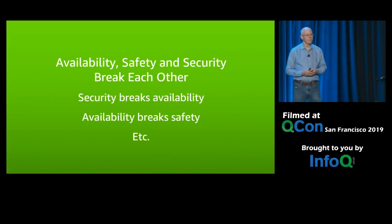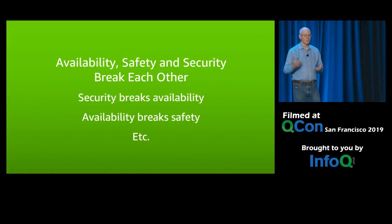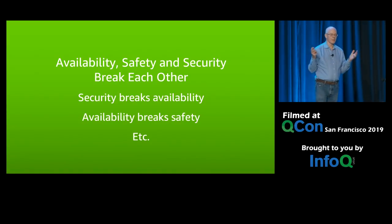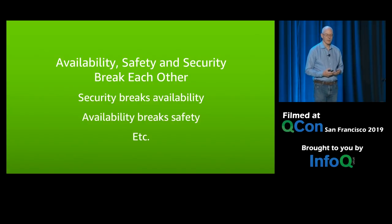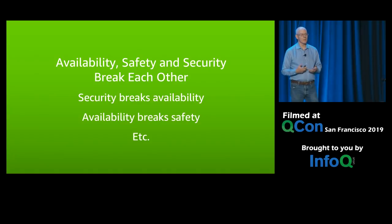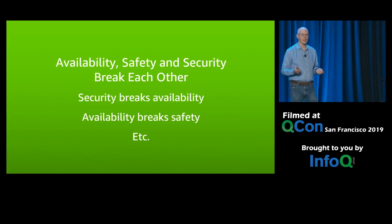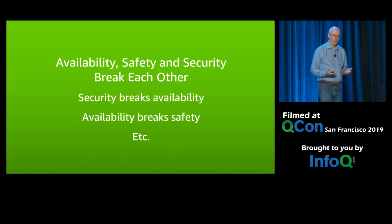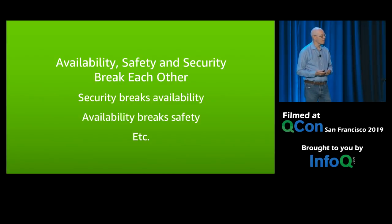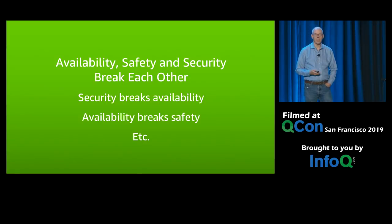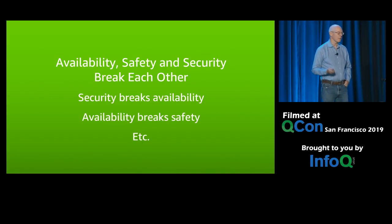But they also break each other. How many times has a security failure taken down your system? If there's a breach going on, the first thing they do is shut everything down so you're not available. And if a system managing safety crashes, you don't have the safety — if your self-driving car controller crashes, it might drive you off a cliff. So these things are all linked, and what I'm going to concentrate on today is the availability piece. Some of these techniques can be used for security and safety as well. I'm particularly interested in safety-critical industries right now.